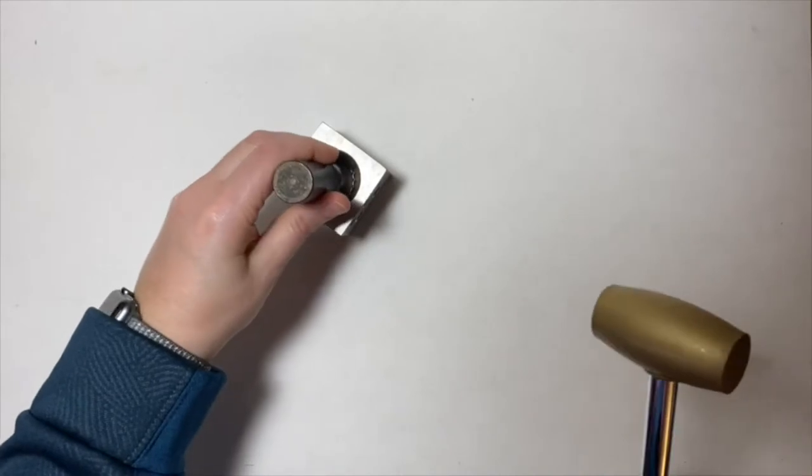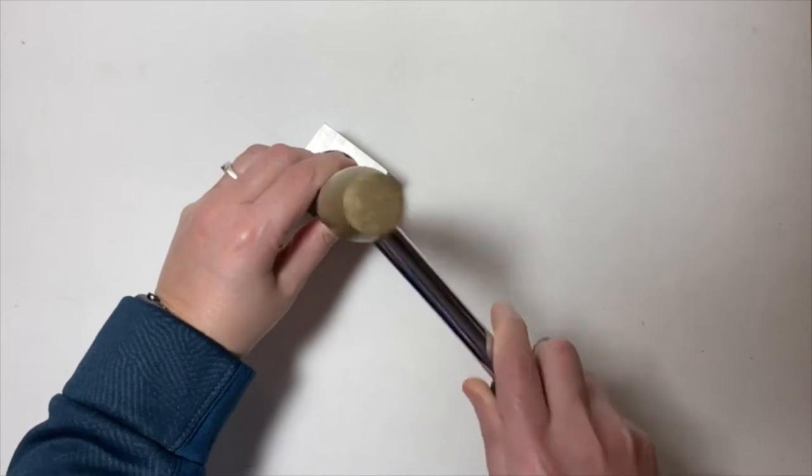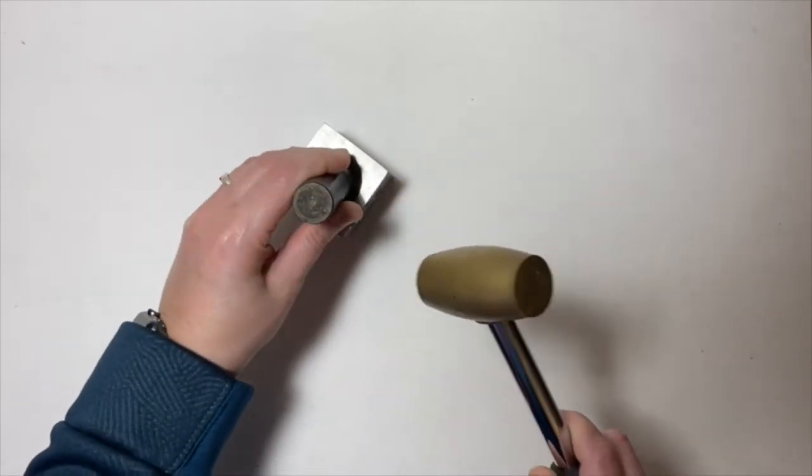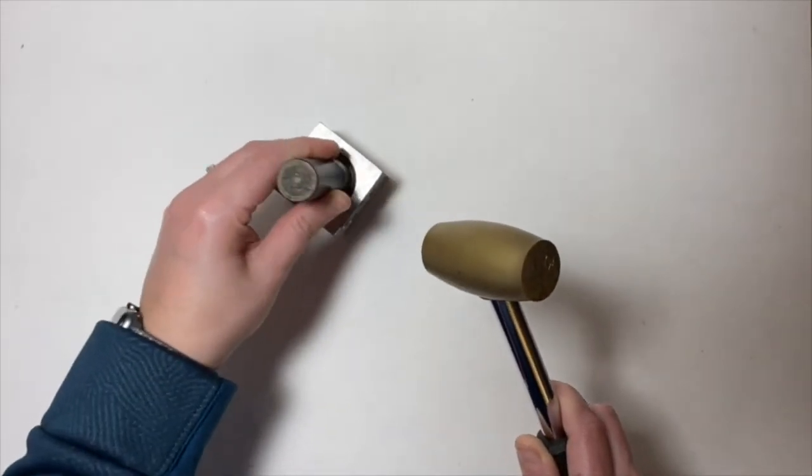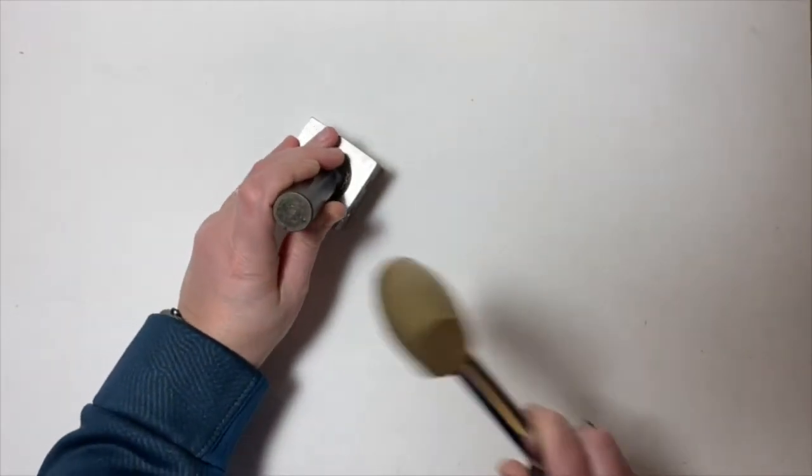This is a doming block and a doming punch with a hammer. All you have to do is take your bottle cap and smash it down into the doming block like I am doing here until you get the shape that you want.